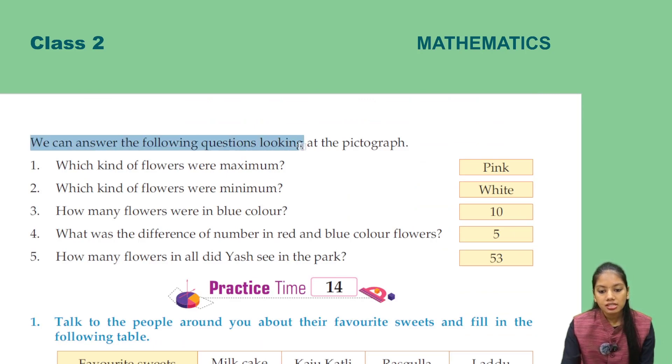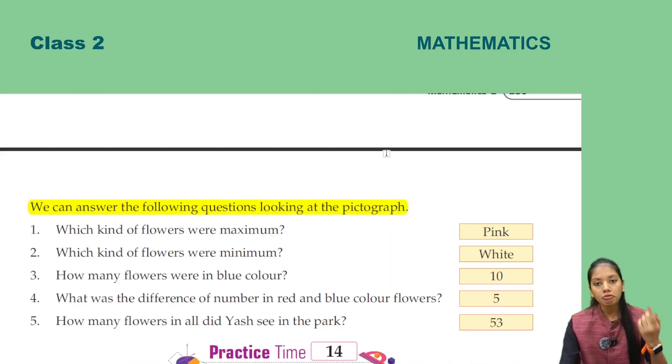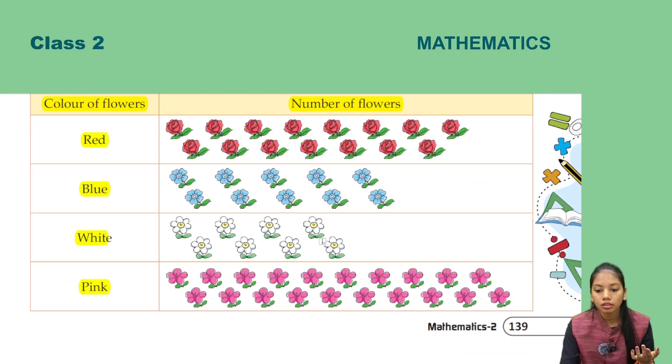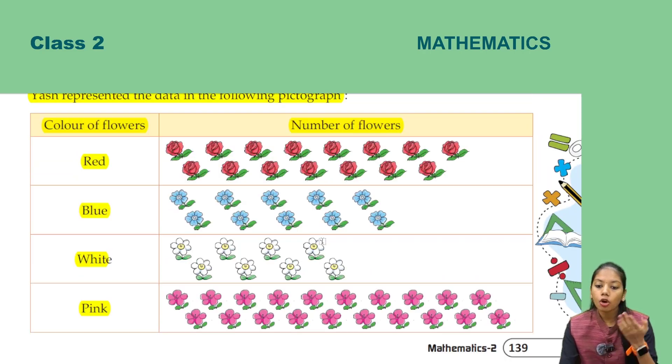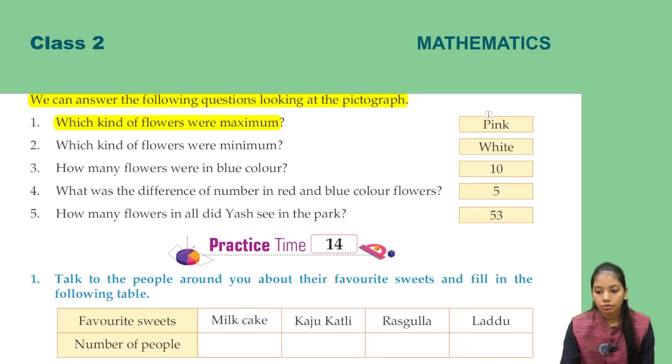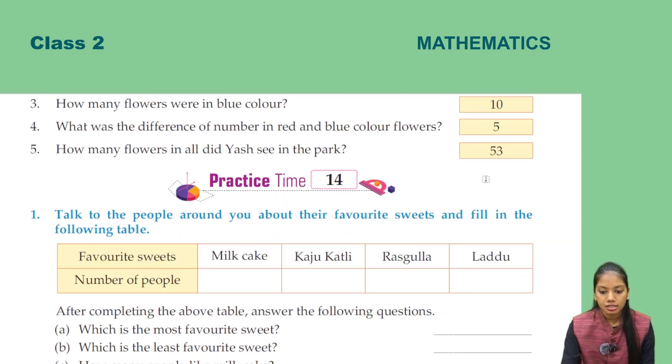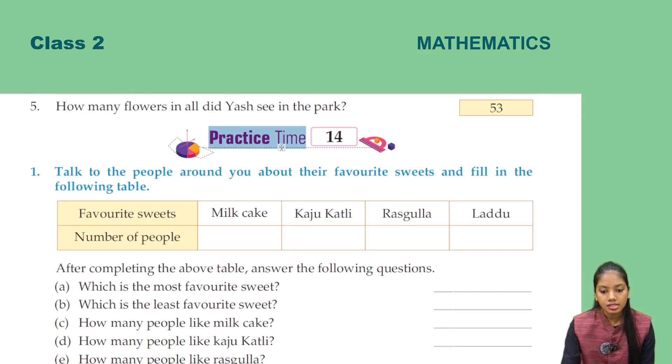We can answer the following questions looking at the pictograph. Looking at this pictograph, you can see the question of the flowers. Which kind of flowers were the maximum? We can see the pictograph and observe it. The most pink flowers are there. This way, the question can be answered.